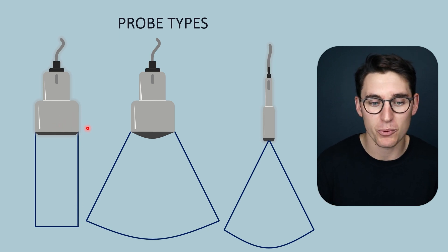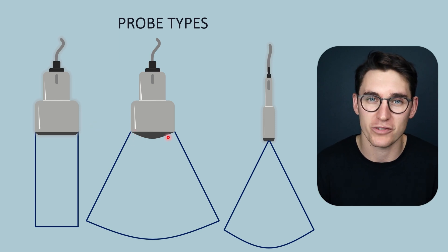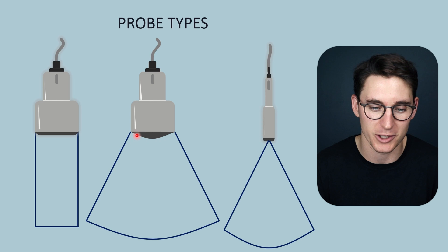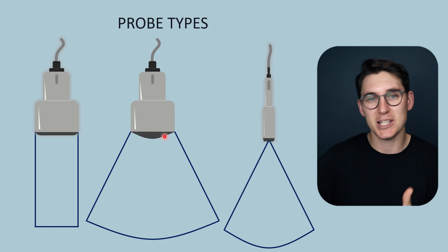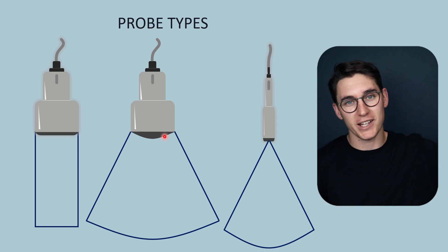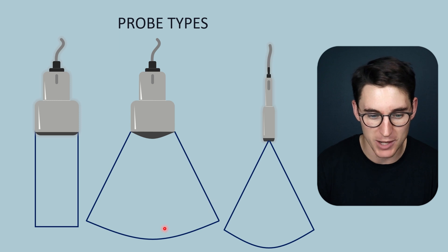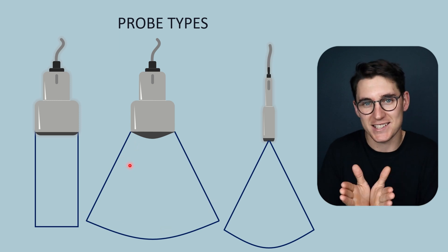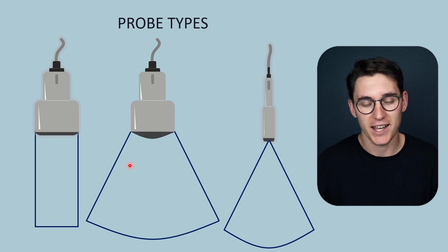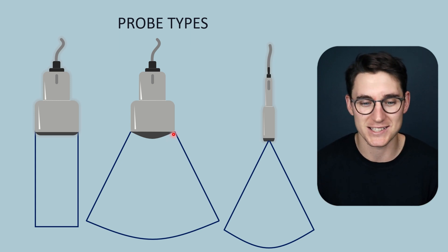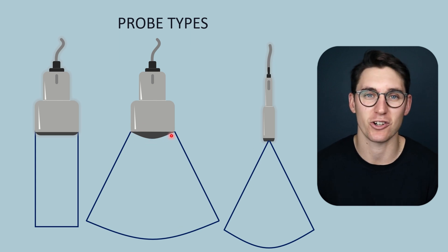We can take this same probe and curve the front of the probe. This is what's known as a curved linear probe or a curvilinear probe. You can see our field of view diverges out — as we get deeper into the tissue we are sampling a greater area of that tissue. This shape is what's known as a sector, a part of a circle like a slice of pizza or a slice of cake. Here we've got what's known as a blunted sector because the front of the probe blunts the apex of the sector.